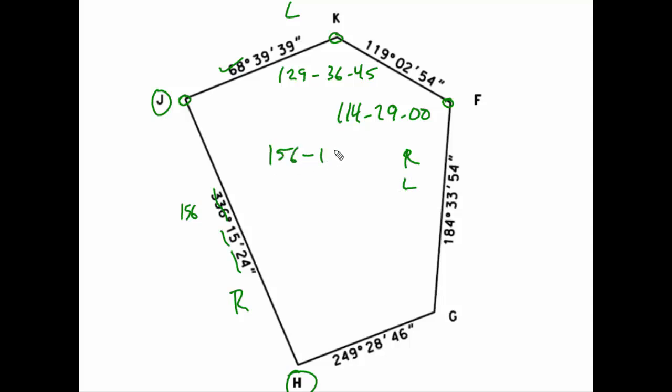156, 15, 24, minus 68, 39, 39. And my result will be 87, 35, 45. That now is the interior angle at J.